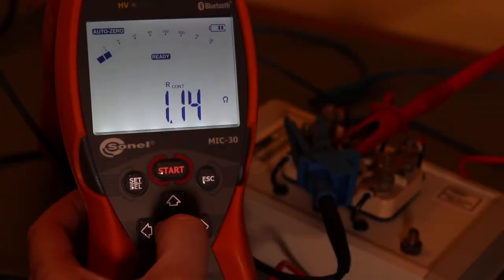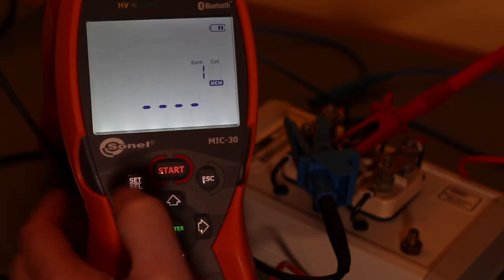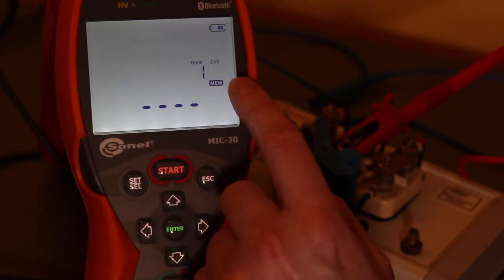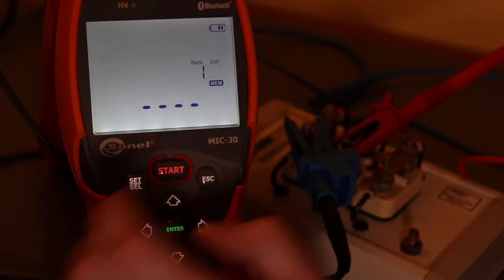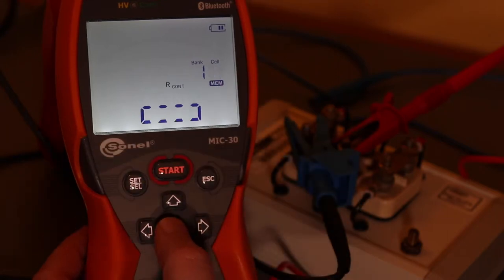To save that, hit the enter button. It says I've got a number of banks and cells there. We're just working with the cells at the moment. I hit enter again and it saves to that cell.